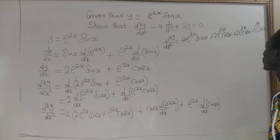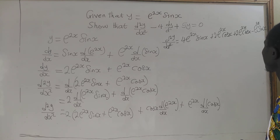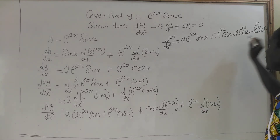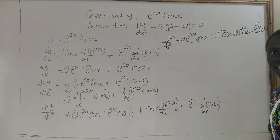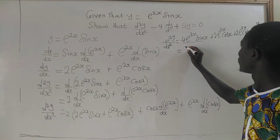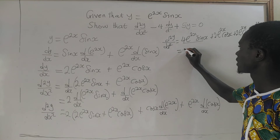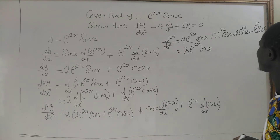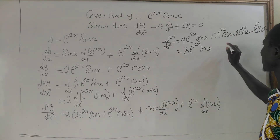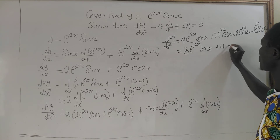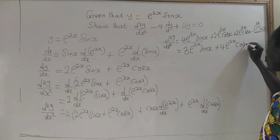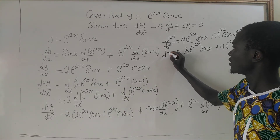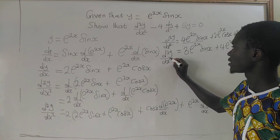Now, do we have like terms we can add or subtract? Yes. The e^(2x)·sin(x) terms are like terms: subtracting 1 from 4 gives 3e^(2x)·sin(x). And the e^(2x)·cos(x) terms are also like: adding gives plus 4e^(2x)·cos(x). So d²y/dx² equals 3e^(2x)·sin(x) + 4e^(2x)·cos(x).